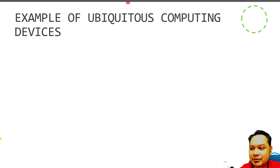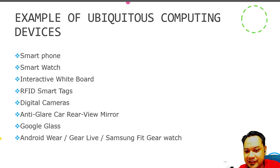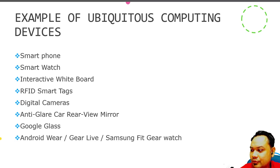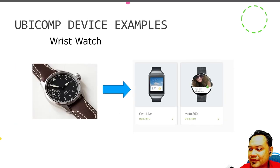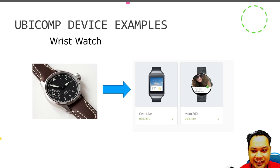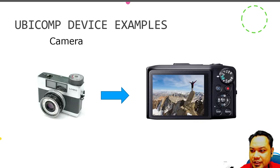Here are some of the Ubiquitous Computing devices available around you — just a small subset. We have smart devices like smartphones, smartwatches, interactive whiteboards, RFID smart tags, digital cameras, and so on. These represent the evolution of everyday objects into Ubiquitous Computing devices, such as a watch being transformed into a smartwatch.